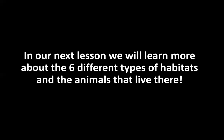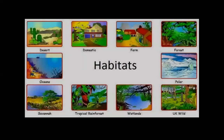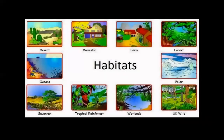In our next lesson, we will learn more about the six different types of habitats and the animals that live there. To give you a preview, we will be talking about the desert, the ocean, the rainforest, the wetlands, the Arctic, and the forest.